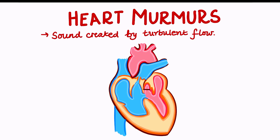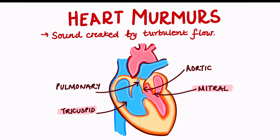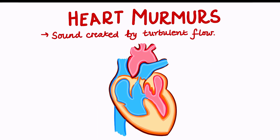Normal heart sounds are made due to the valves closing in these cycles. The four valves of the heart are aortic, pulmonary, mitral and tricuspid valves. There are two main normal heart sounds. The first is S1, due to the closure of the mitral and tricuspid valves, which marks the start of ventricular systole. The second sound is due to the closure of the aortic and pulmonary valves, marking the end of ventricular systole and the start of diastole.